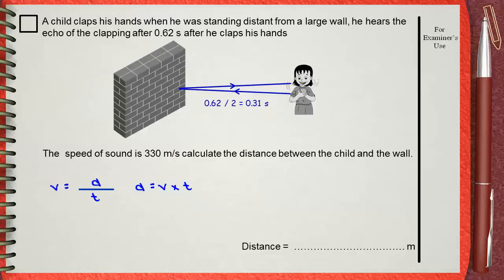The speed of sound is 330 meters per second. The time of only one trip from the boy to the wall takes 0.31 seconds. So the distance between the boy and the wall will be 330 times 0.31.